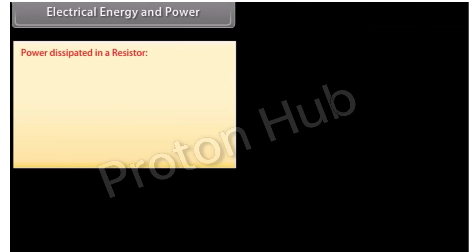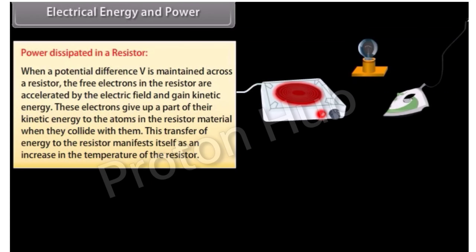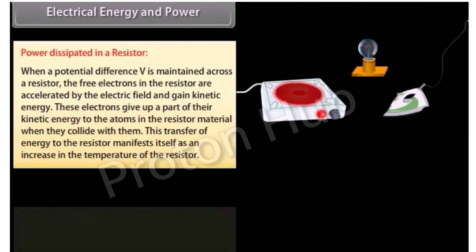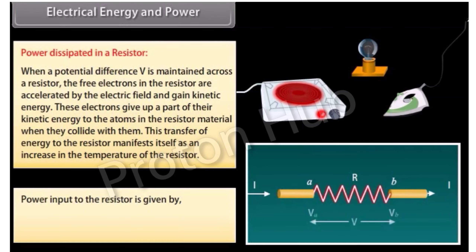When a potential difference V is maintained across a resistor, the free electrons are accelerated by the electric field and gain kinetic energy. These electrons give up part of their kinetic energy to the atoms in the resistor material when they collide with them, manifesting as an increase in temperature of the resistor. Power input to the resistor is P = VI = I²R = V²/R.